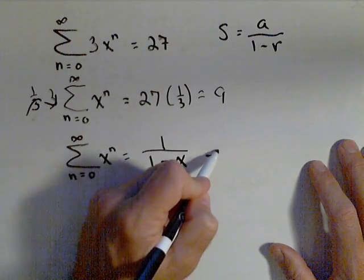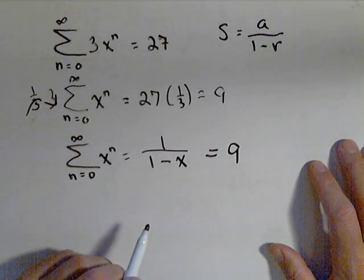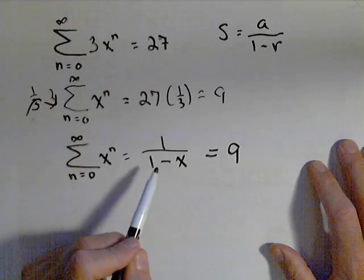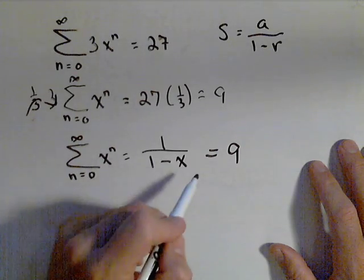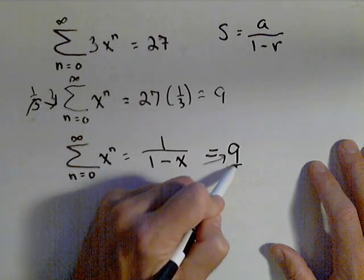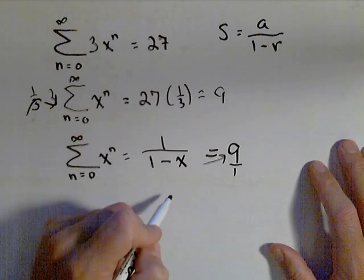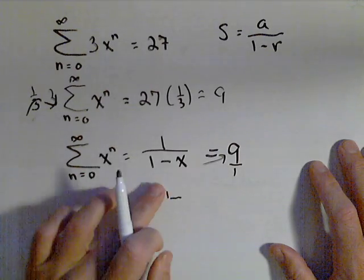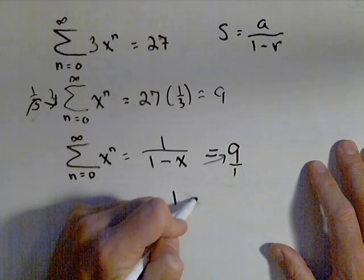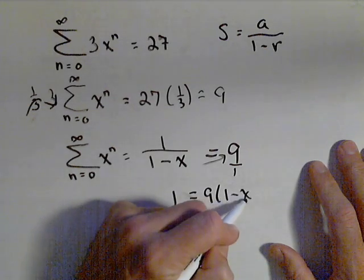So I'm gonna set that equal to 9, and this is the equation I have to solve. It's actually not a bad equation. What I can do is cross multiply the 1 minus x, so I get 1 equals 9 times (1 minus x).